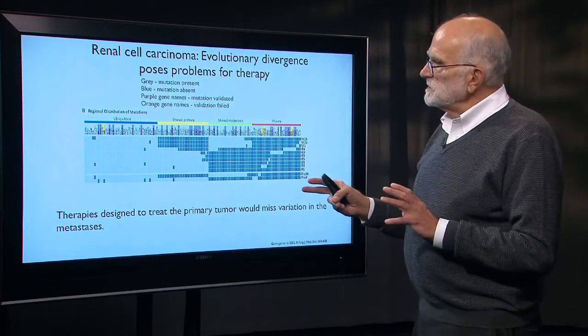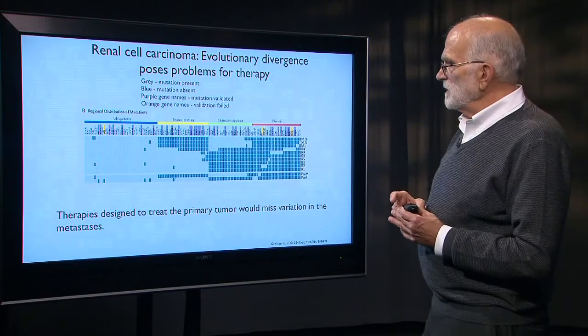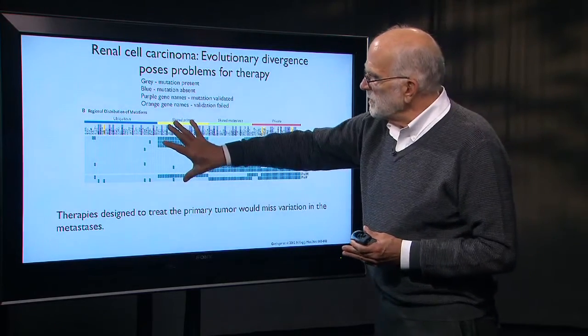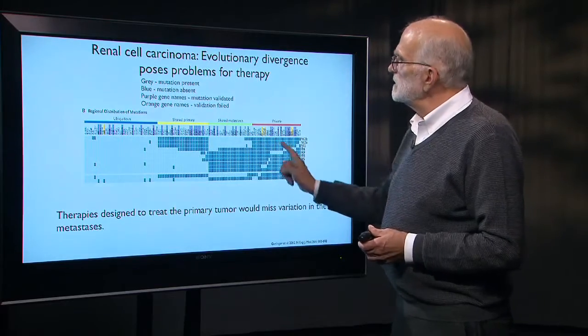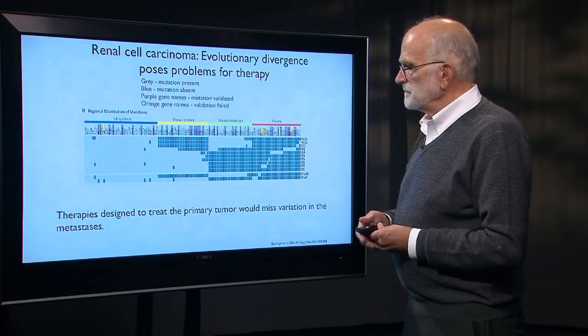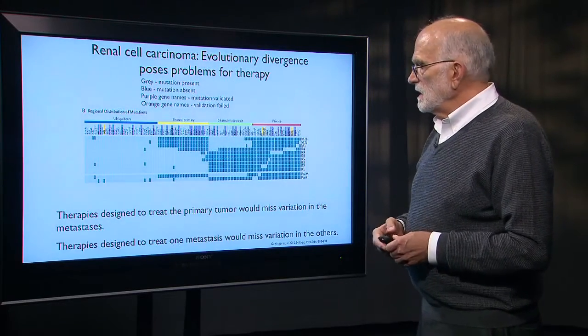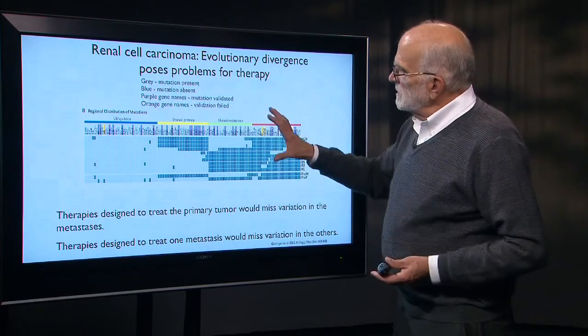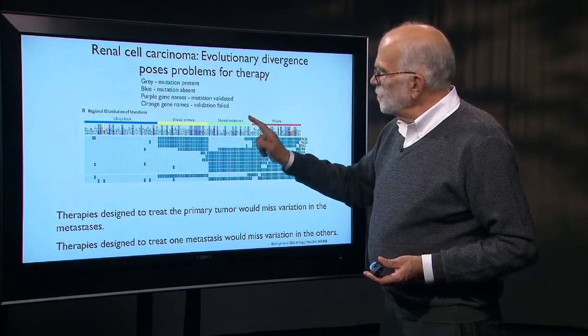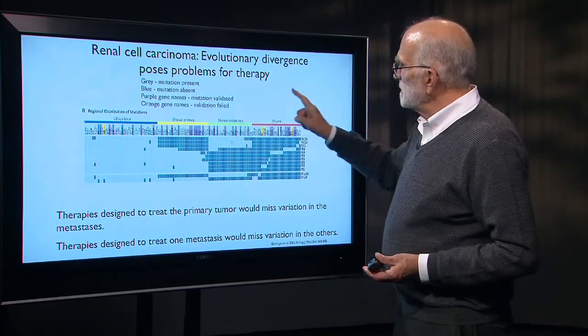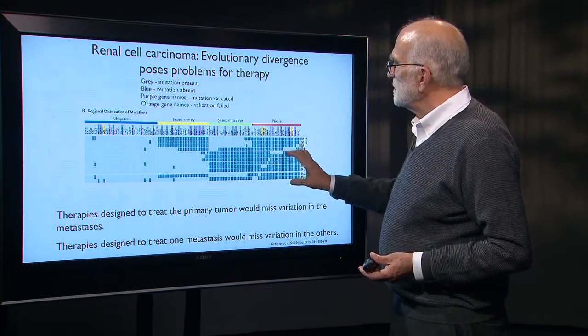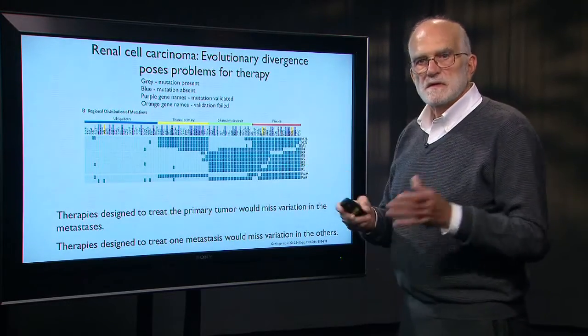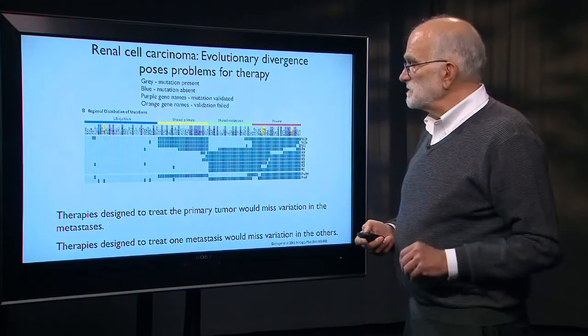The take home on this is that if you design a therapy to treat the primary tumor here, that is going to miss variation in the metastases over here. And if you design a therapy to treat one metastasis, it's going to miss what's characterized here as the private variation that is cropping up in each individual metastasis.